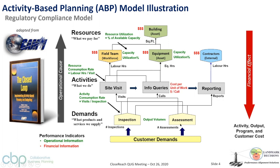You pay for your people, depreciation on equipment, lease and utilities on buildings, maybe external contractors. We pull those dollars back down through the model to get at activity cost, demand cost, and even customer cost. Customers typically take a variety of demands from our organization. If you're in cost-recovery mode or in the private sector, you can determine profitability on a customer or product-service basis.